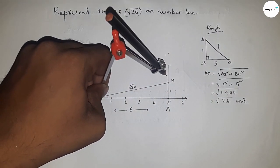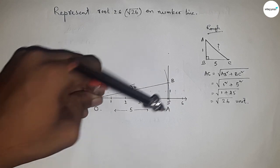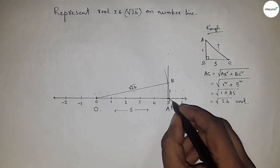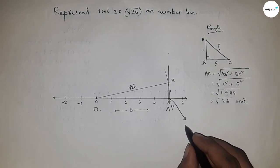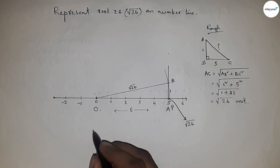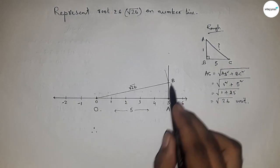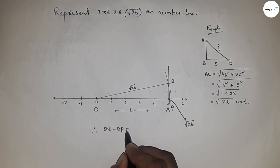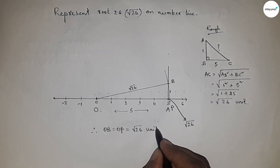Draw an arc which meets the number line at point P. This is the representation of root 26 on the number line. Therefore, distances OB and OP are equal, so distance OP equals root 26 units.